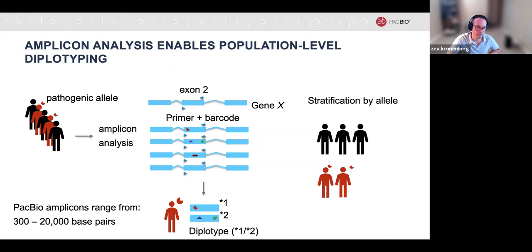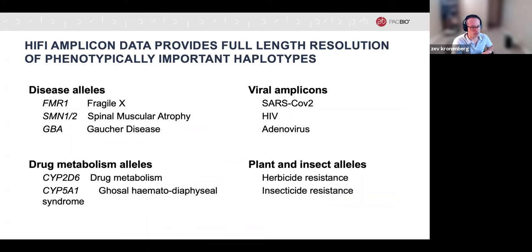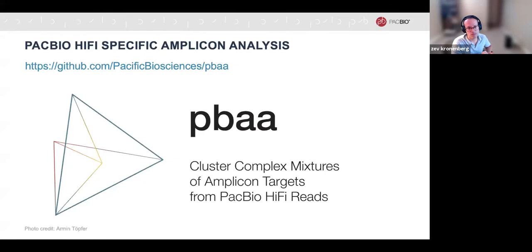We've looked at amplicon analysis on a number of human disease alleles, drug metabolism alleles, viral amplicons including SARS-CoV-2, HIV, and adenovirus, and plant genes involved in herbicide or insecticide resistance. For human disease alleles where amplicon analysis works really well: Fragile X — a very tough repeat structure — Spinal Muscular Atrophy, and GBA, which is Gaucher's disease. Our HiFi-specific amplicon analysis software is called PBAA, or PacBio Amplicon Analysis, designed to cluster complex mixtures of amplicon targets from PacBio HiFi reads.